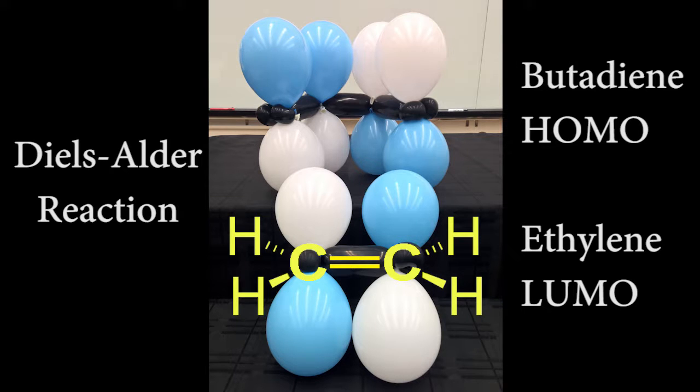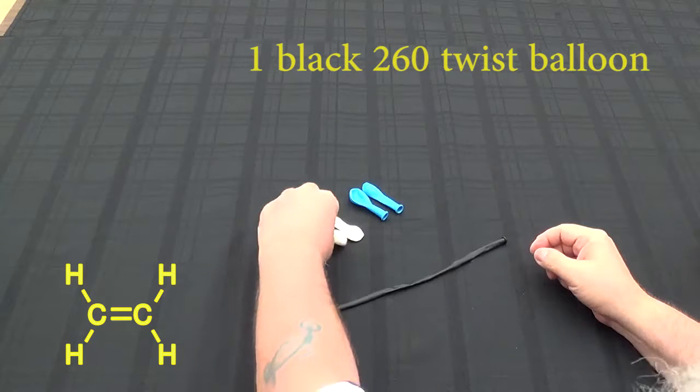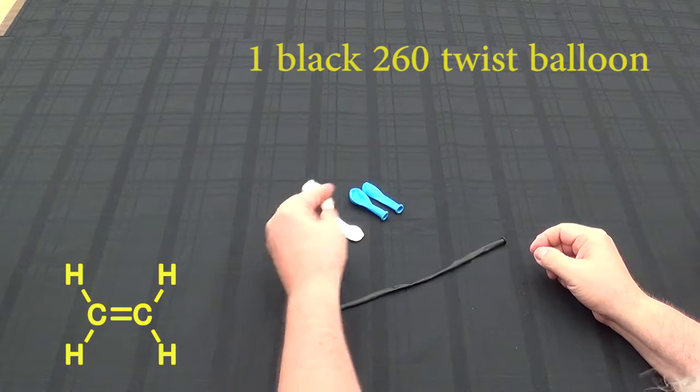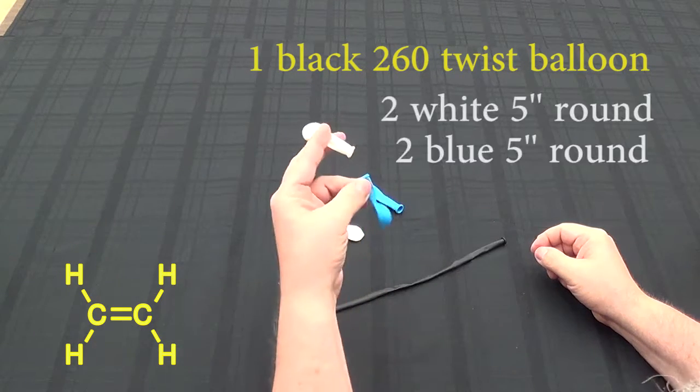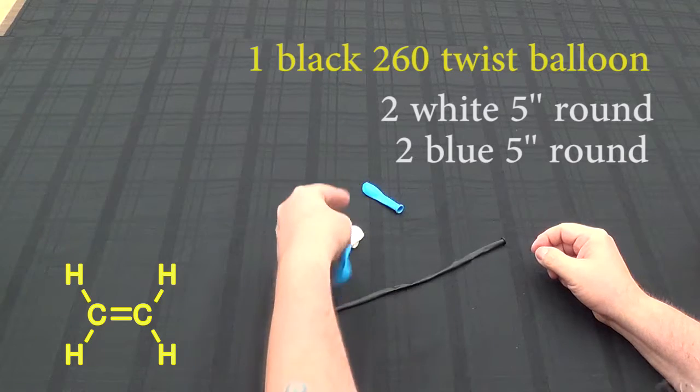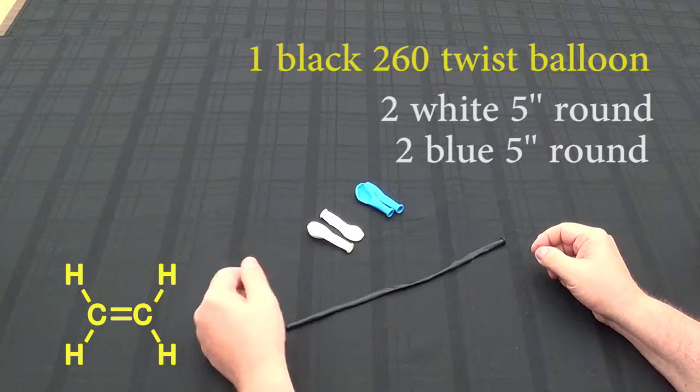We need one black 260 balloon for the orbitals and to show the phase on the different orbitals, the different signs. We're going to use two white 5-inch balloons and two blue 5-inch balloons.